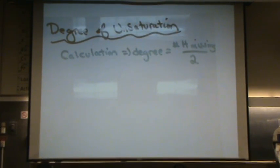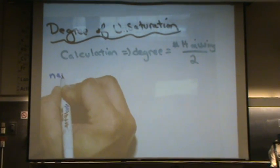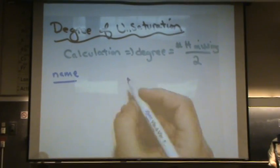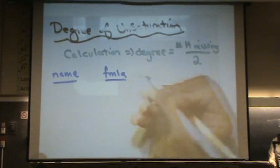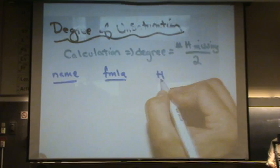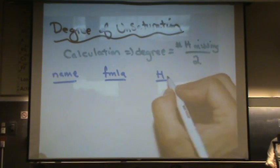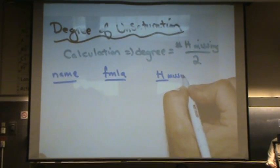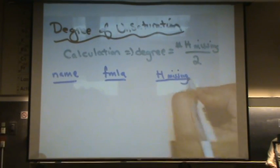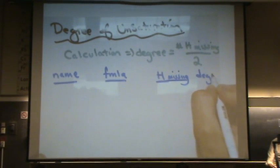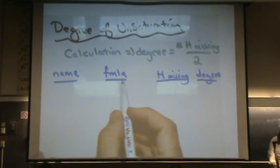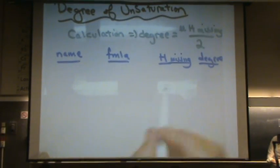The degree of unsaturation equals the number of H's missing from the structure divided by 2. So if you can divide by 2, you're pretty set. Let me give you some examples and make a little table. So I'm going to do name as my first column, formula my next column, H's missing, and then the degree of unsaturation is my last column.